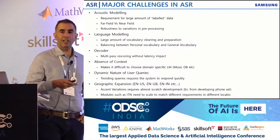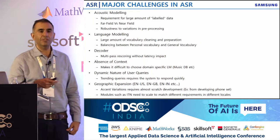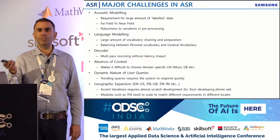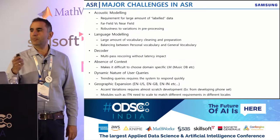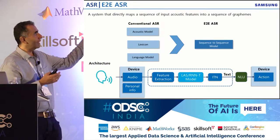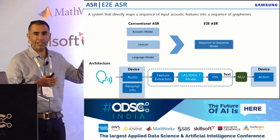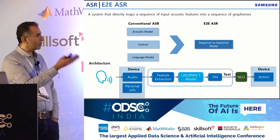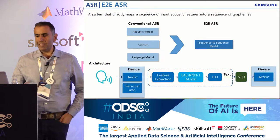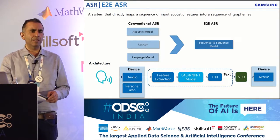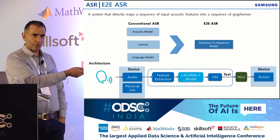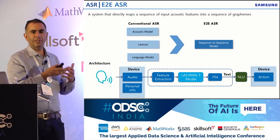As a result of all these challenges, accuracies have still not exceeded 75-80%. End-to-end learning is one approach — instead of separate acoustic model, lexicon, and language model, you have one model using sequence-to-sequence learning. There are several variants: the Listen, Attend and Spell (LAS) model, the RNN transducer model, and CTC. People are experimenting with all of them and some have worked very well.